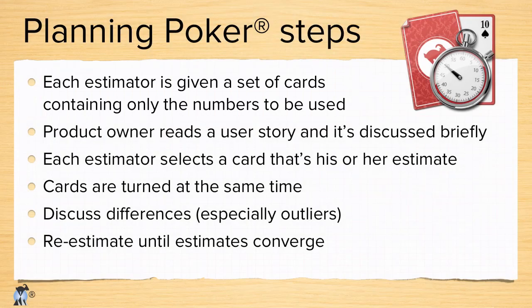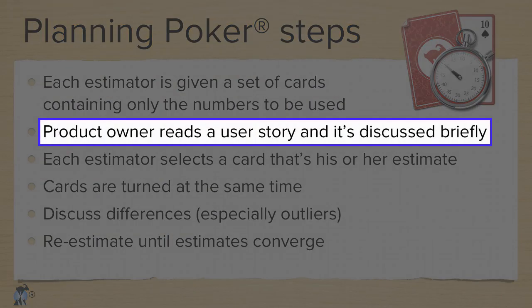The product owner reads a product backlog item, usually a user story, to the team. The team and the product owner discuss the item. Team members ask questions, and the product owner clarifies expectations.